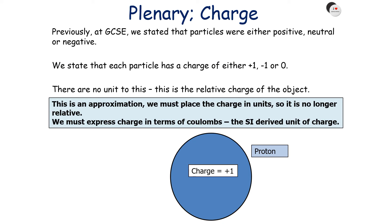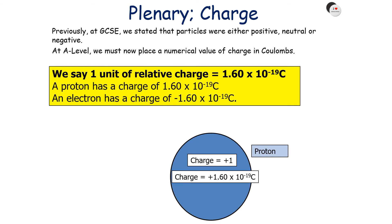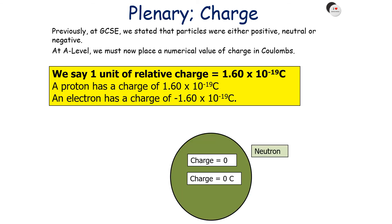Previously at GCSE, we stated that particles were either positive, neutral, or negative — plus 1, minus 1, or 0 — with no unit. This was the relative charge. But this is an approximation; we must place the charge in units, expressing it in Coulombs, the SI-derived unit of charge. One unit of relative charge equals 1.60×10⁻¹⁹ Coulombs. So a proton has a charge of +1.6×10⁻¹⁹ C, an electron has a charge of −1.60×10⁻¹⁹ C, and a neutron has zero charge both relatively and in Coulombs. You should memorize this value going forward.